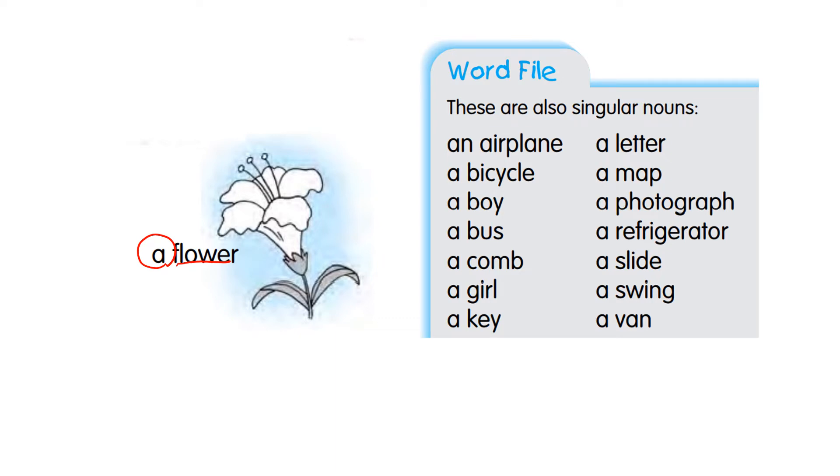And these are also singular nouns. Airplane, an airplane. Bicycle, a bicycle. A boy, a bus. A comb. A girl. A key.